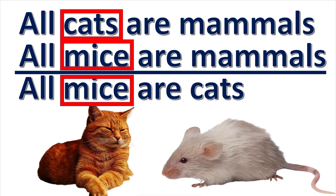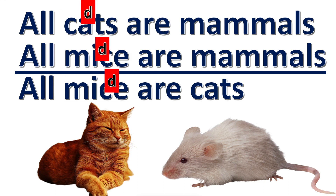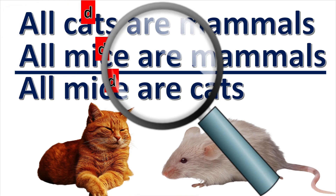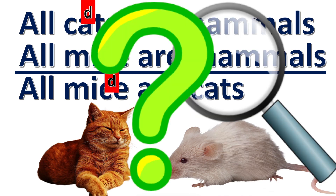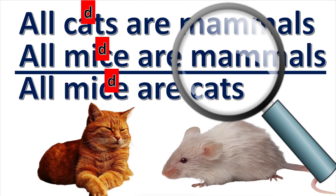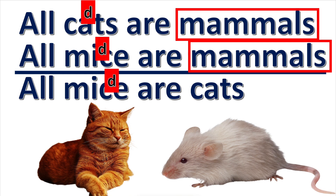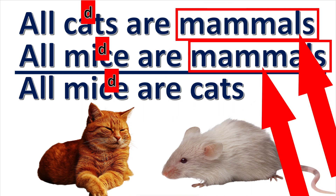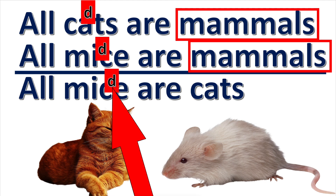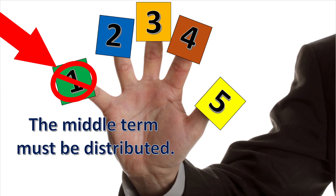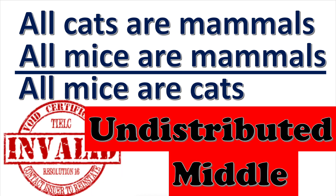Look at this syllogism. First, we mark all the terms that are distributed with a small letter D. Notice all three propositions are A propositions, so all the subject terms are distributed. Now we check to see if the middle term is distributed. The middle term is the term that is repeated in the premises. Mammals is the middle term in this syllogism, and it is not distributed in either premise — there is no letter D next to it. So this syllogism is invalid; it breaks rule one and commits the fallacy of undistributed middle.